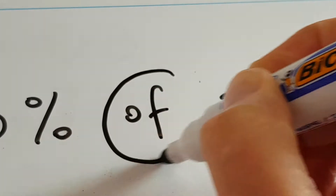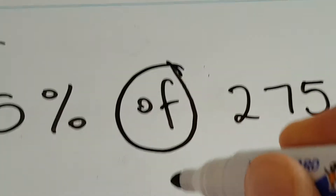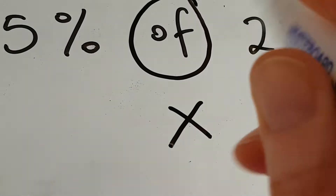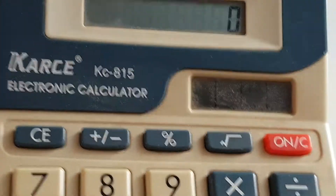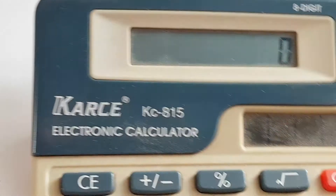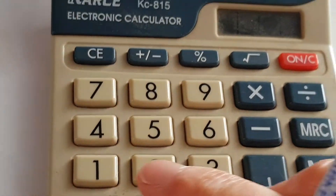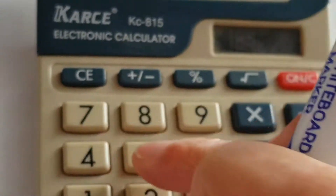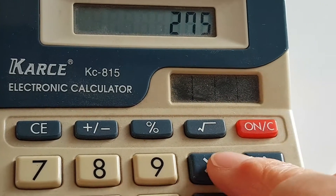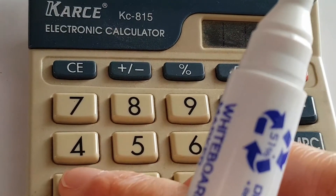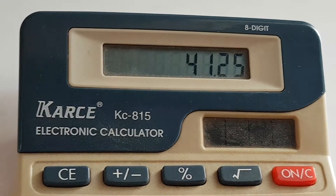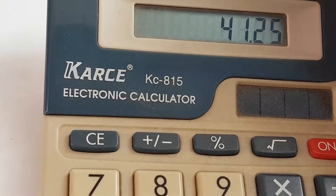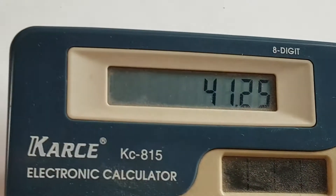This word 'of', in maths terms, very often means we multiply, and that's what we do on the calculator. So what we're actually going to do is switch our sentence around, and we're going to put in 275 times 15%, and we get 41 euro and 25 cents. That's how much discount you would get. Is that okay?